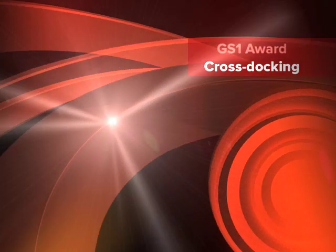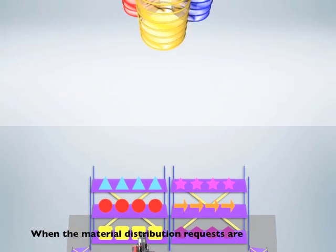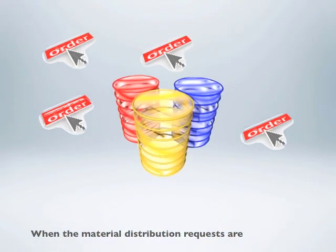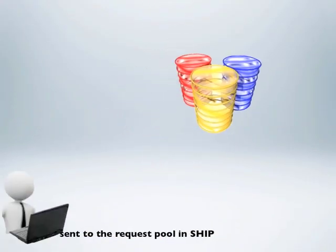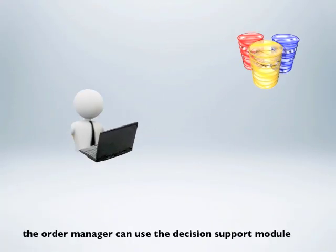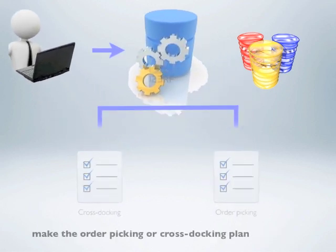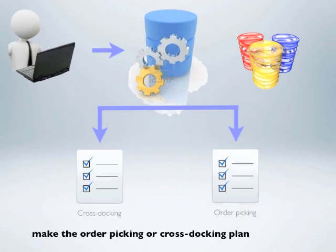First of all, let's see the cross-stocking procedure. When the material distribution requests are sent to the request pool in SHIB, the order manager can use the decision support module to make the order picking or cross-stocking plan.